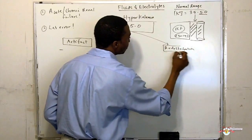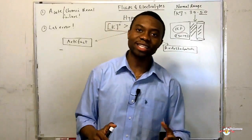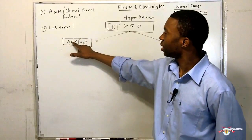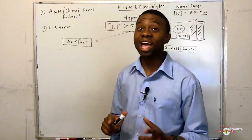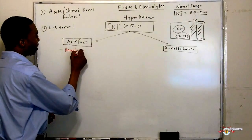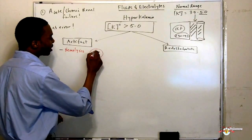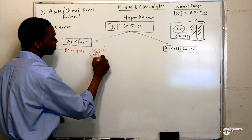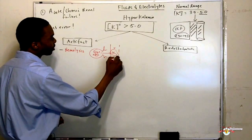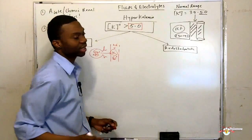When you see a patient with a very high potassium level, the first thing you should think about is: was this a lab error? If it's a lab error, it's usually due to hemolysis. Why hemolysis? Because red blood cells have a lot of potassium in them. When they lyse open, they release all that potassium into the bloodstream, and you develop hyperkalemia when potassium is greater than five.